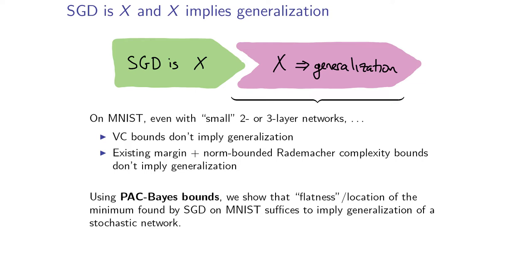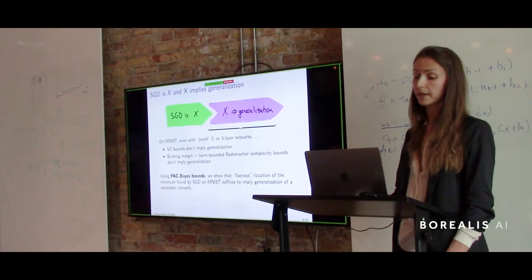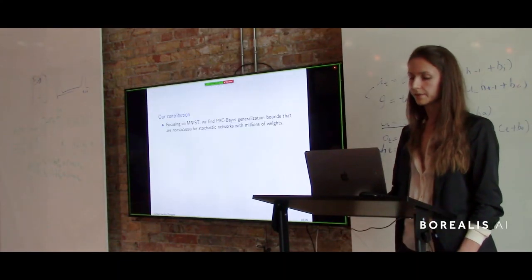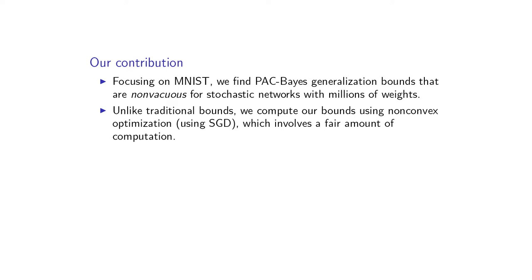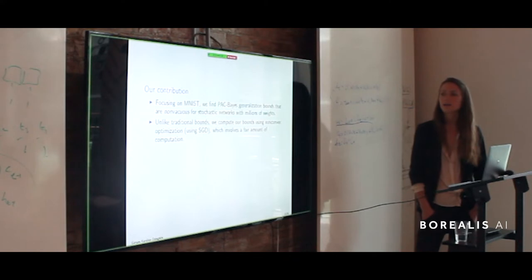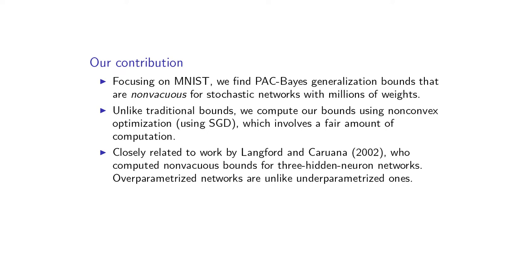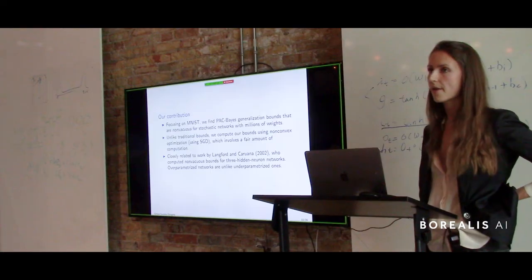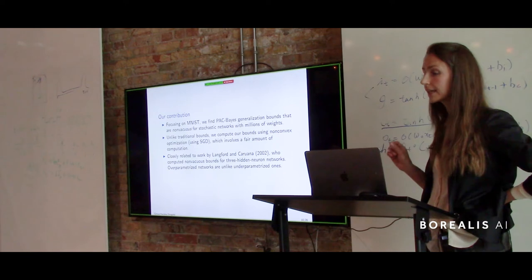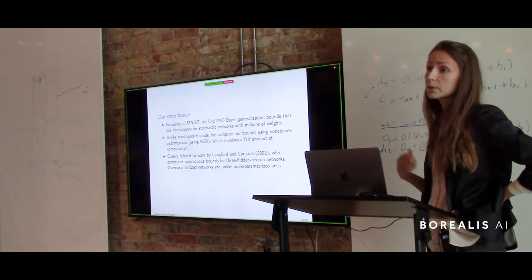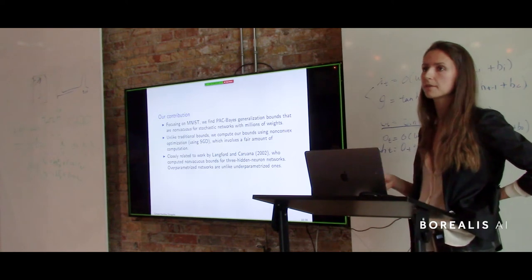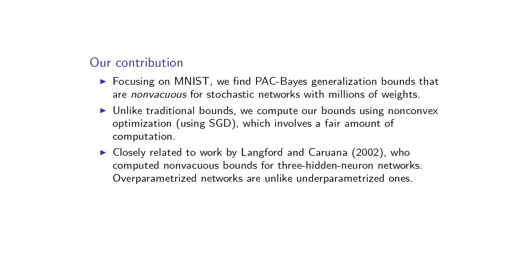Using PAC-Bayes bounds, we show that the flatness and location of the minimum found by SGD on MNIST suffices to imply generalization for stochastic networks. Our contribution is getting non-vacuous generalization bounds via PAC-Bayes on the MNIST dataset. Unlike traditional bounds, our bounds require a lot of computation and optimization. This work is closely related to work by Langford and Caruana in 2002, who computed non-vacuous bounds for very small neural networks with only three hidden units. Their techniques don't extend to modern neural networks because modern networks are really overparameterized, whereas those underparameterized networks are nothing like modern overparameterized networks.